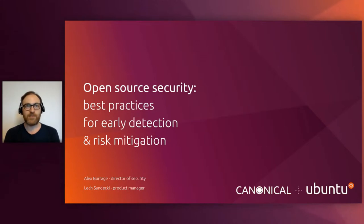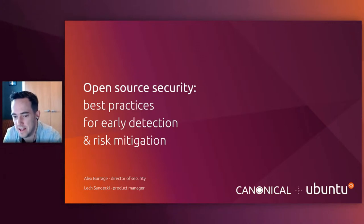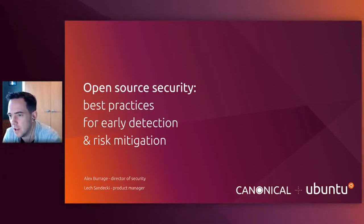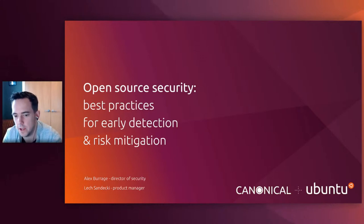The topic of today's webinar is open source security best practices for early detection and risk mitigation. It's quite a broad topic. We can cover a lot of different areas today — we probably won't go into all the detail in all of them, but to touch on a few areas: this covers the knowledge you need to operate in an open source environment, some of the tooling that will help you operate safely, and some of the processes you can implement to make your lives easier going forwards.